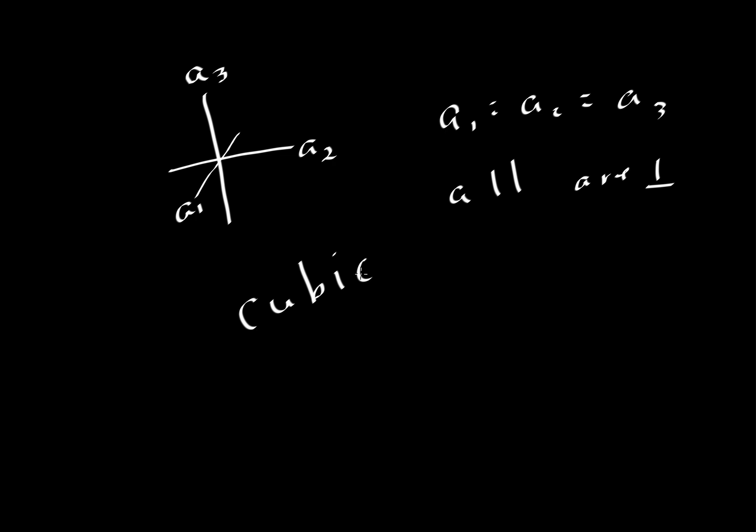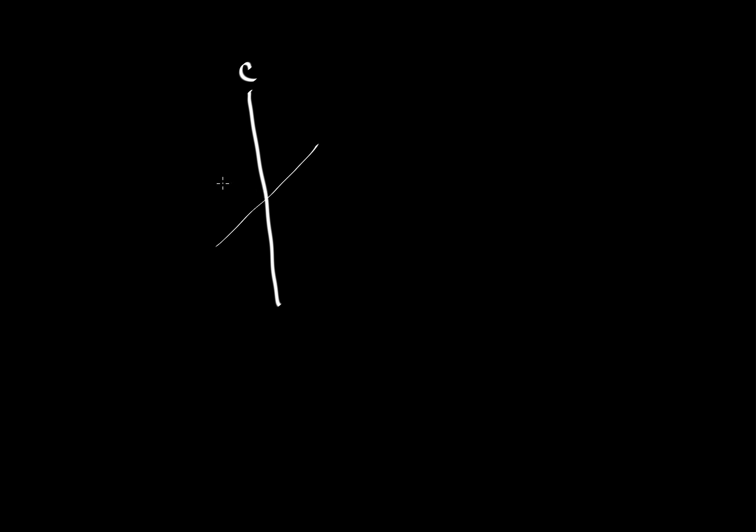So we've covered everything except the one we started off with as an example for quartz. What about the hexagonal system? The hexagonal system would be a case where we have a C axis, could be long or short. And then we have three axes here. And those axes are situated. So we'll call them A1, A2, and A3.